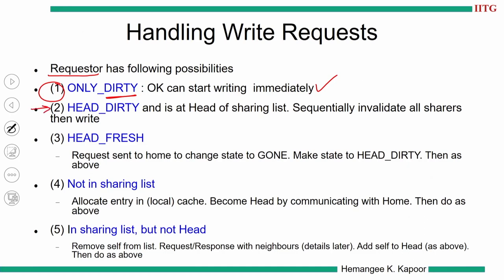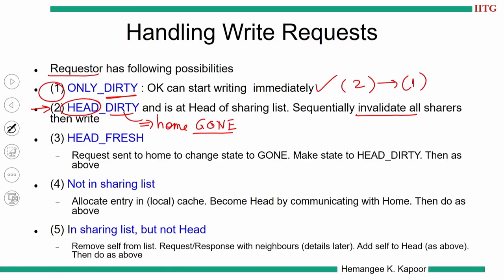The second case is the requester is the head node and has dirty status. This implies the home is in the gone state. When home is in the gone state, we do not have to inform the home because it already knows the dirty block is elsewhere. Hence we can start writing, but prior to that we must invalidate all the sharers. Since this node is head, there is a list existing, so we have to purge that list, become the only dirty node, and then start writing. In condition 2, we have to move to condition 1: from head dirty, move to only dirty, then write.